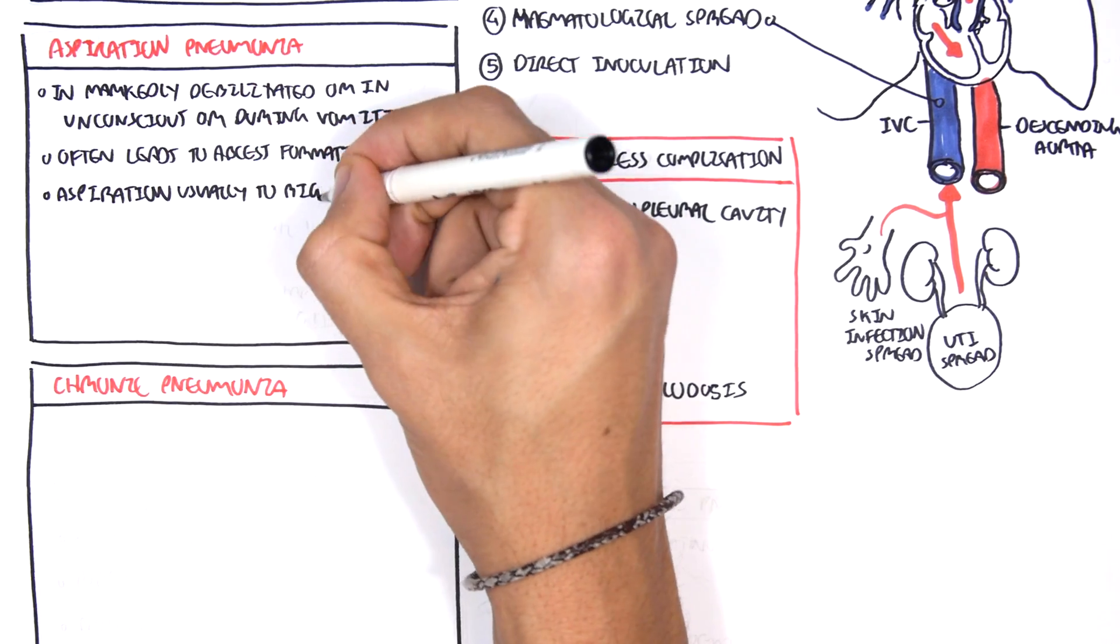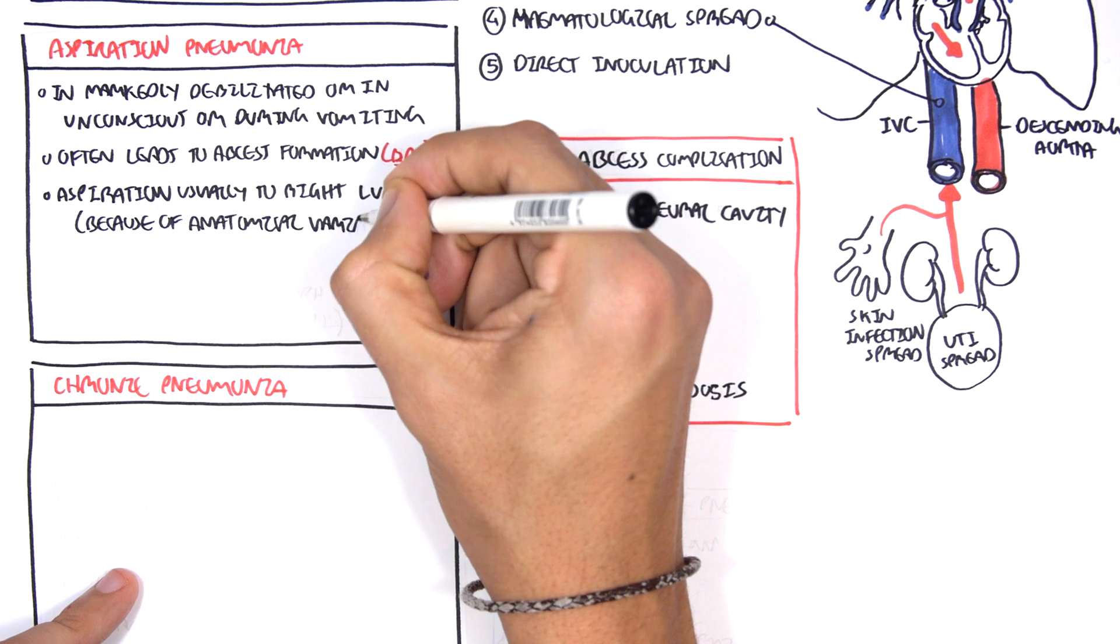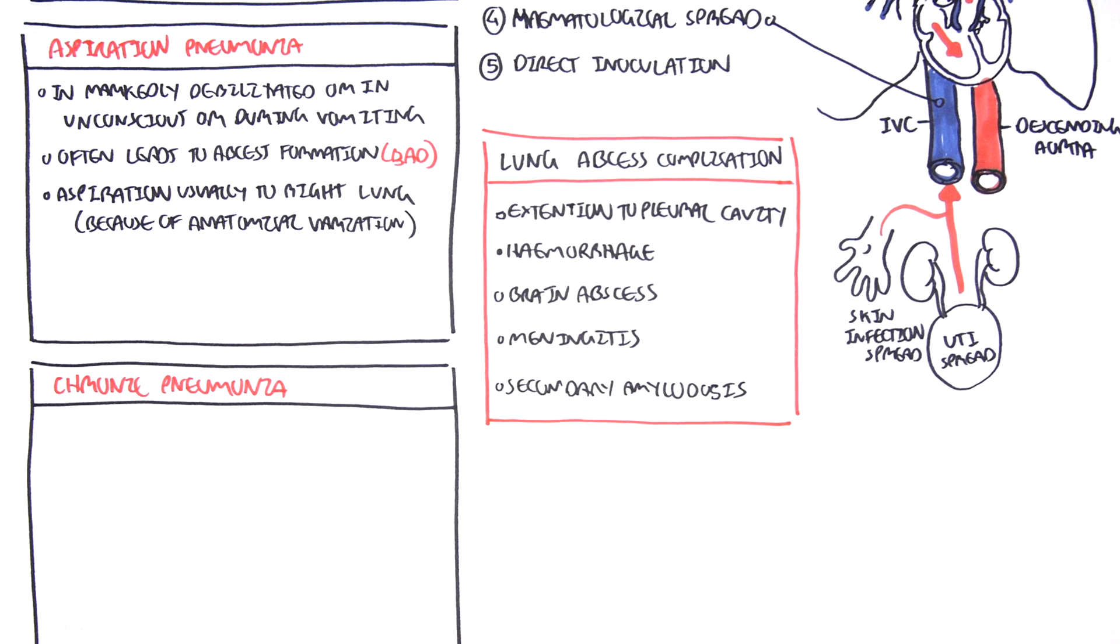Now, so back to aspiration pneumonia. Aspiration pneumonia usually occurs in the right lung because of the anatomical variation. So the right lung has a wider, essentially, hilum, and it's often more vertical. And so things can get into the right lung easier.